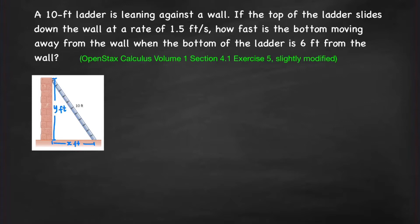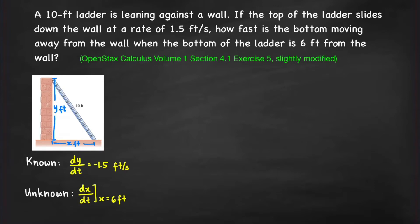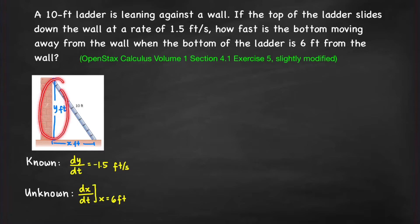Next, determine all the known information and what you're looking for. The known information: the top of the ladder slides down at a rate of 1.5 feet per second, so dy/dt equals negative 1.5 feet per second. Why is it negative? Because a negative derivative means y is decreasing as t increases. Since the ladder is sliding down the wall, the value of y is decreasing, so the derivative must be negative. Take note: if your variable decreases as time passes, then its rate of change must be negative.